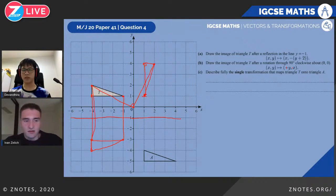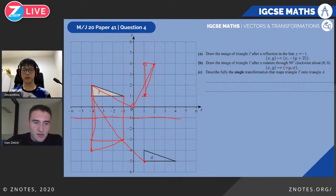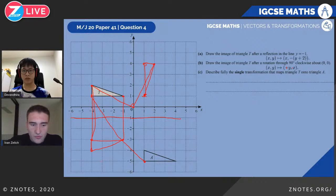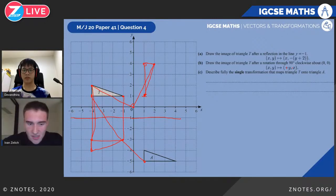Describe fully the single transformation mapping triangle T into triangle A. This looks like a translation. This point goes to this corresponding point — counting six down and five across — so the translation vector is (5, −6).